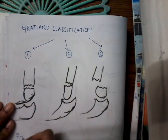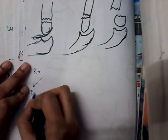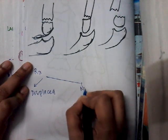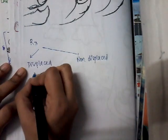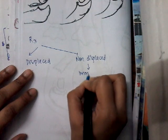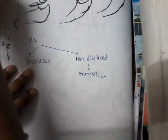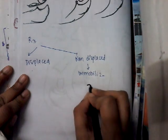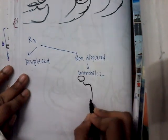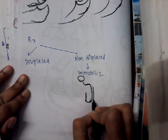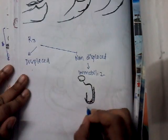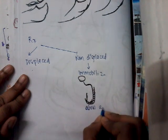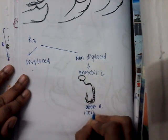Treatment depends on whether the fracture is displaced or not displaced. If the fracture is not displaced, we will immobilize it with an above-elbow slab. So we make an above-elbow slab for the patient.